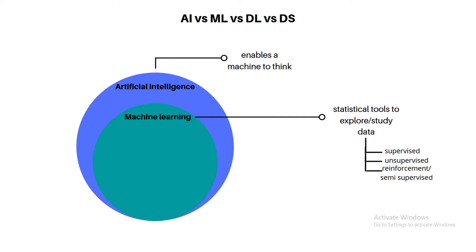Next is reinforcement machine learning. In this approach, the model continuously learns from the environment. It looks at new data, learns new information, and adjusts the model accordingly. This continuous learning and adjustment is the core theory behind reinforcement machine learning.